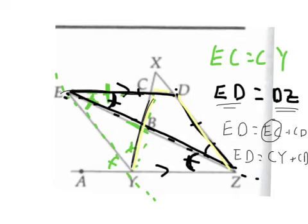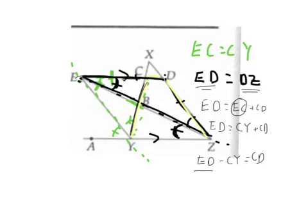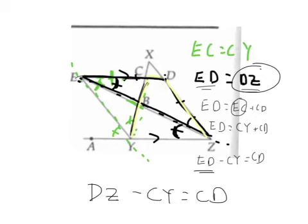And then I think we just need to substitute. So we know that ED is the same as DZ, so we have DZ minus CY equals CD. I think that's what we're trying to show.